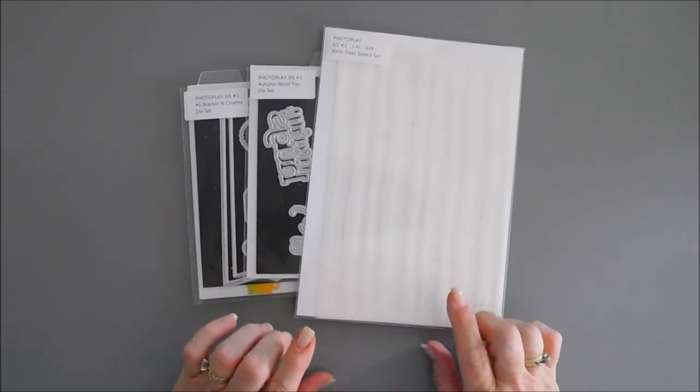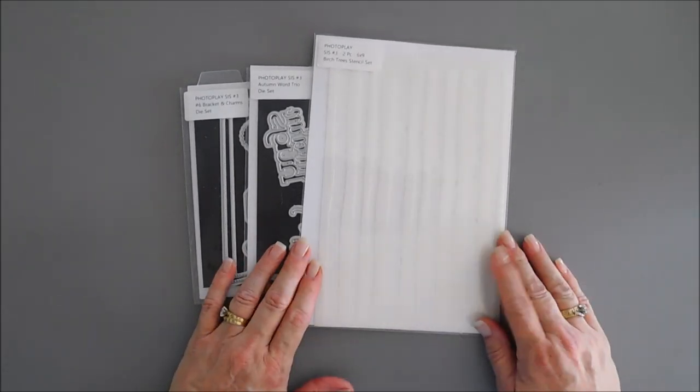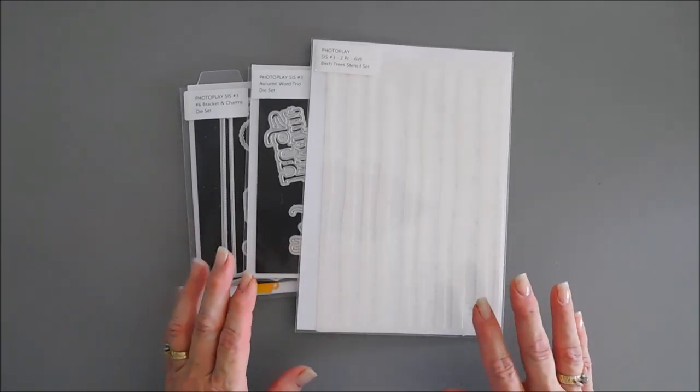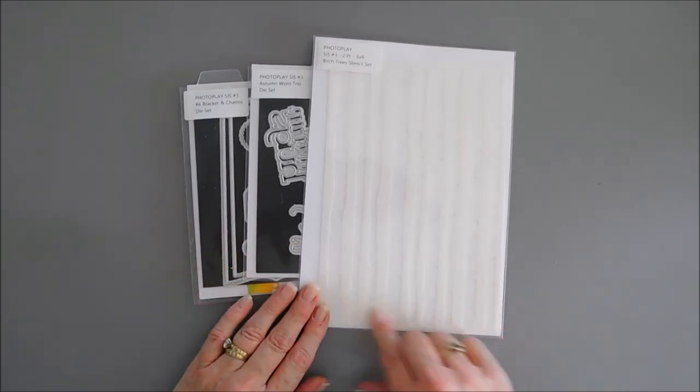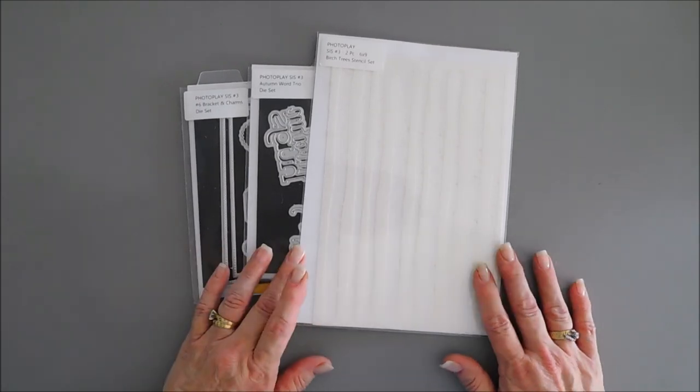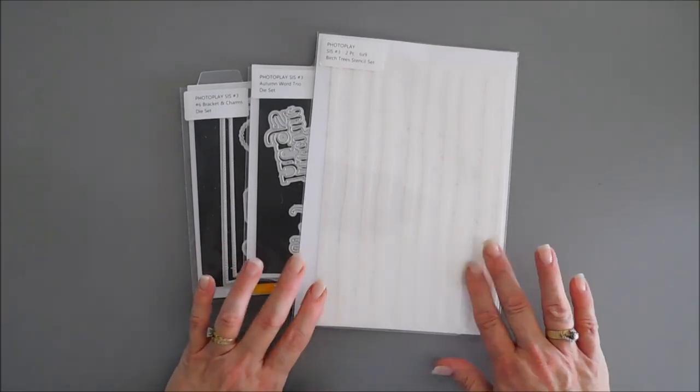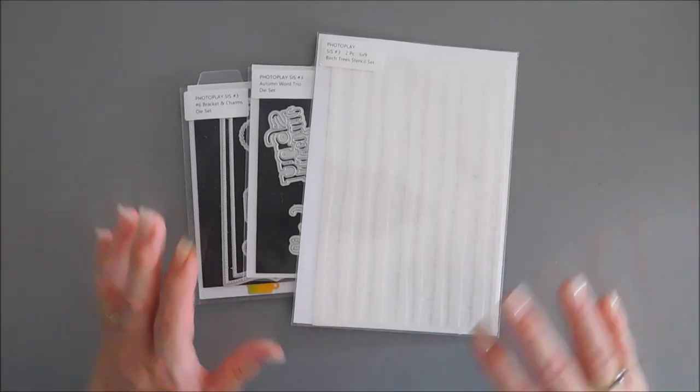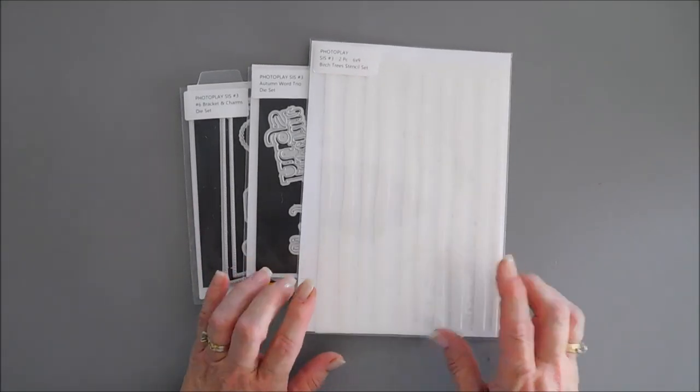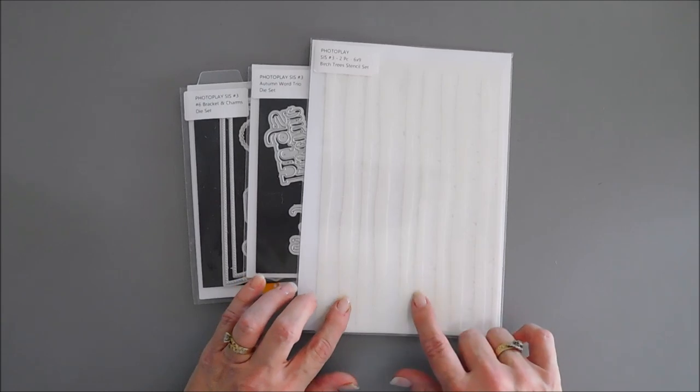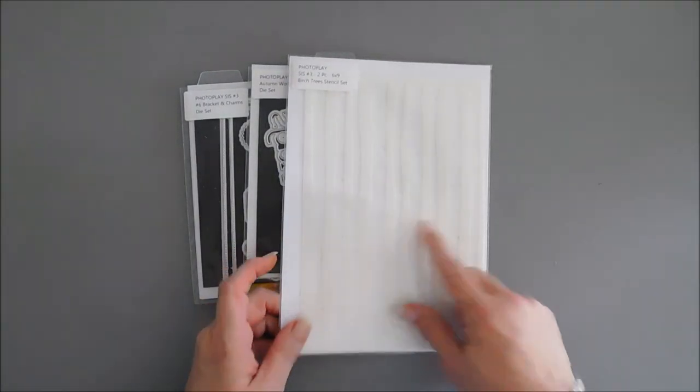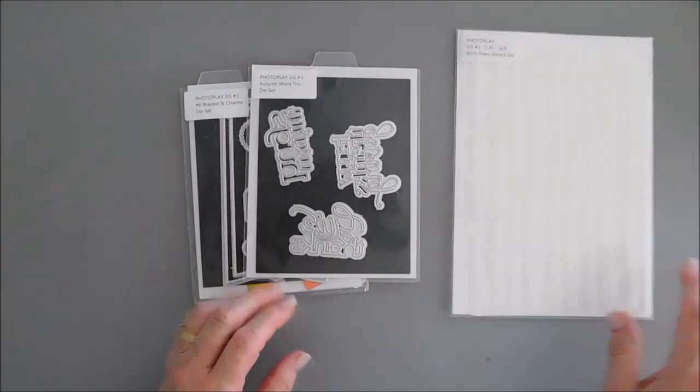We are going to be using the Say It With Stamps birch tree stencil set. I love the size of these—they're so perfect for so many different size cards: slimline cards, mini slimlines, five by seven, six by six, A2 size. This is a two-piece stencil set, so I think it's going to be neat to create some fun birch trees for our background.